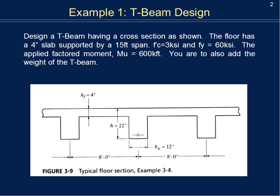The first problem is a T-beam we're asked to design with the cross-section shown. The floor is supported by a 4-inch slab and has a 15-foot span — that span is in and out of the board. The concrete has a strength of 3 KSI, F_y is 60 KSI, and the applied factored moment M_u is 600 kip-feet.